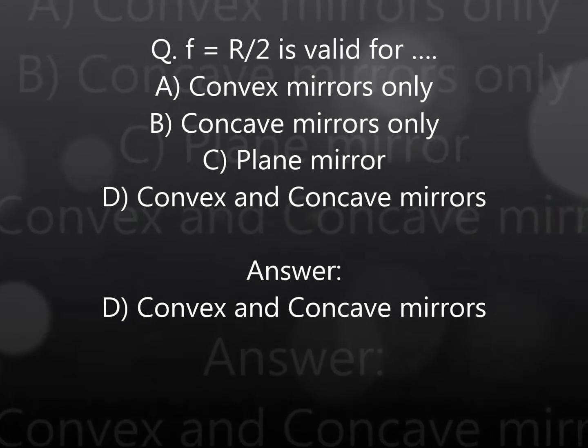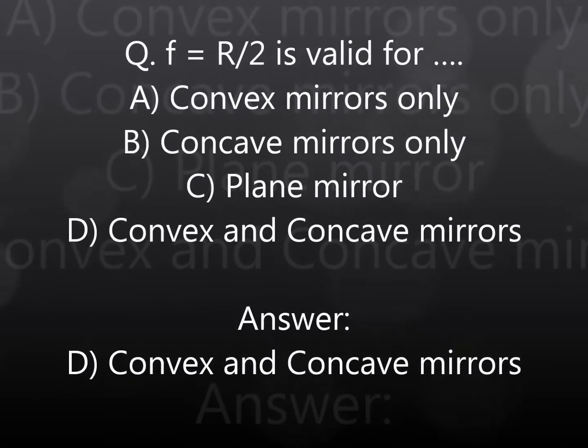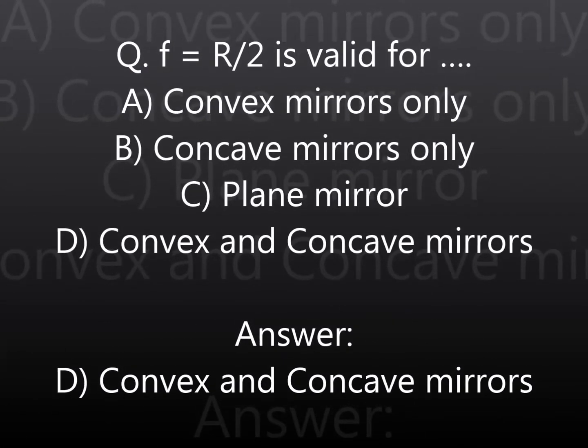F is equal to R by 2 is valid for: A. Convex mirror only, B. Concave mirror only, C. Plane mirror, D. Convex and concave mirrors. Answer: D. Convex and concave mirrors.